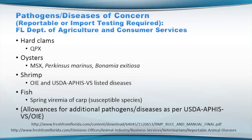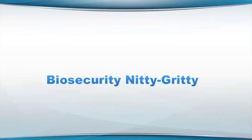This is an example of pathogens and diseases of concern in Florida — some are reportable and some may require testing prior to import. My point with these three different lists is you really need to know where you're raising animals, what the requirements are with regard to reporting, and also what diseases are of concern on the regulatory side. You obviously need to know which ones can cause disease for your own facility in order to help protect your animals.